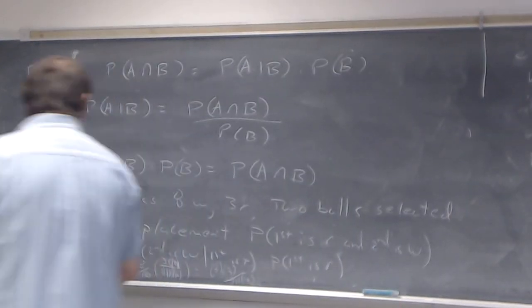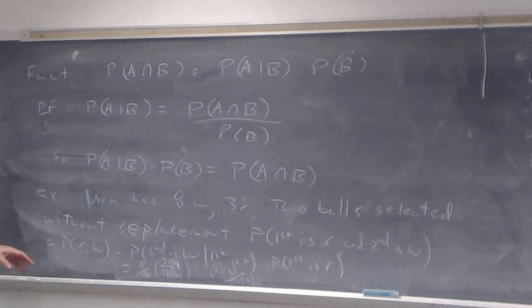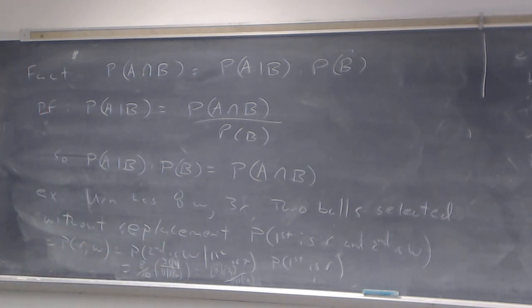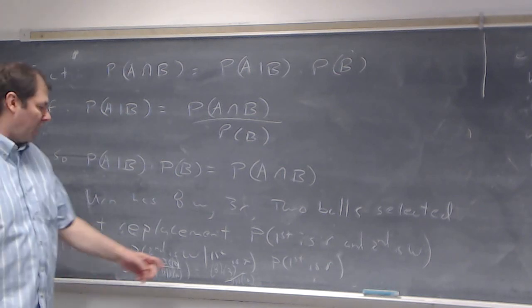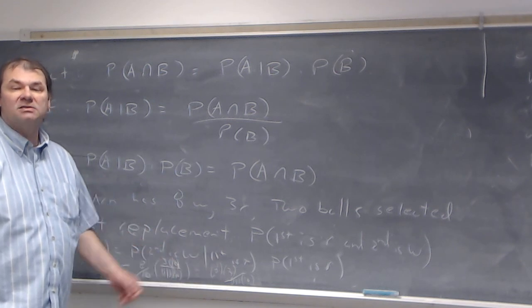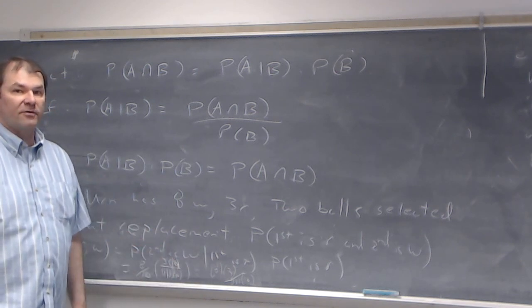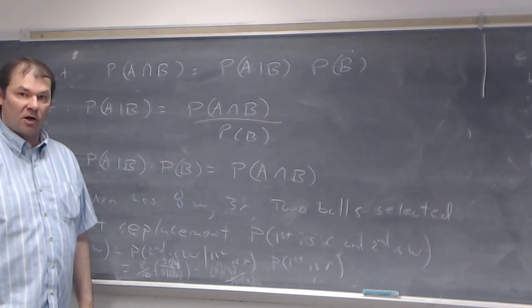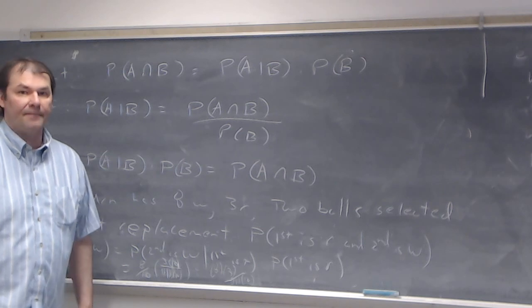Computing the conditional probability of what happens next given what happened previously is usually easy by reducing the sample space. But computing the probability of what happened earlier given what happens next is more difficult. We have a formula that helps — called Bayes' theorem — and we'll look at that next time. Thank you very much.